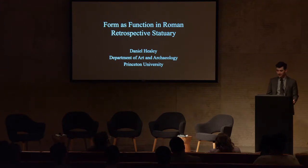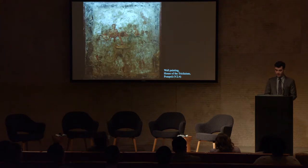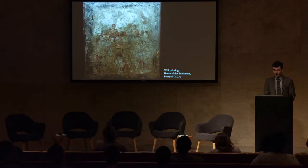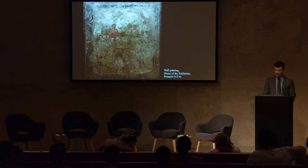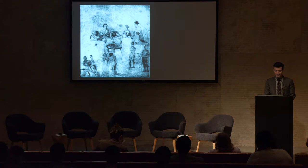Thank you, Michael, for that introduction, and thank you to everyone at the Barnes for organizing this great day of art history and for all of you for attending. In this badly faded painting cut from the wall of a dining room in Pompeii, we can still discern the elements of a rather louche Roman dinner party. In the upper register, a group of male and female diners recline together on couches. One of their party has had too much to drink and is slumped over the table, very much in his cups. In the foreground center is a gyrating female dancer.